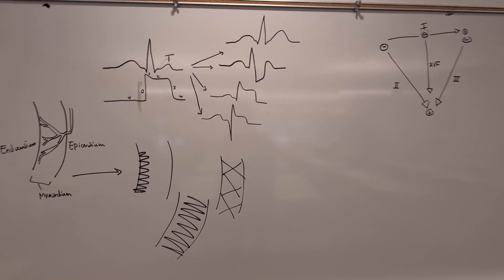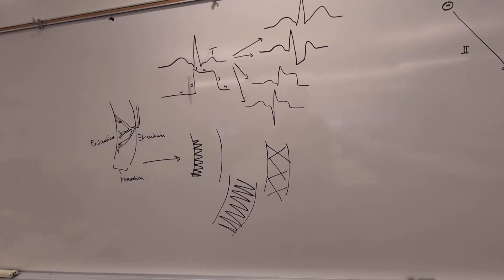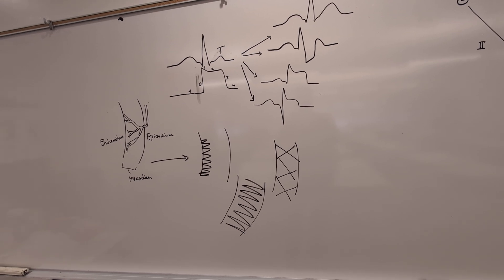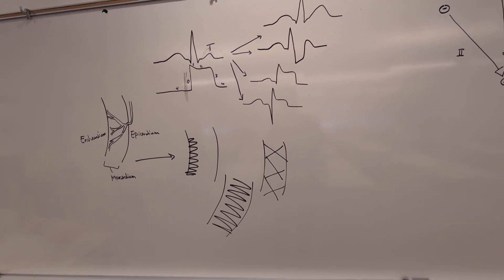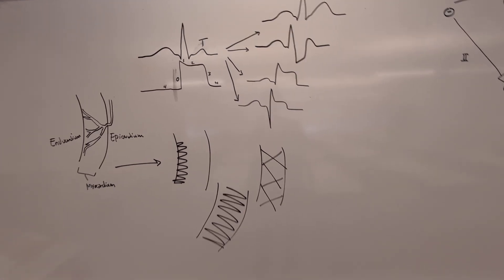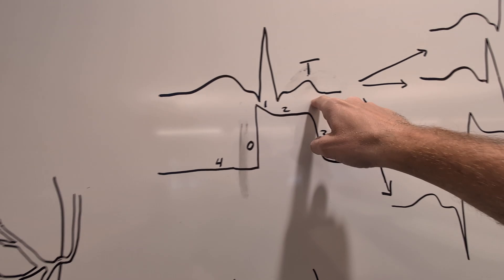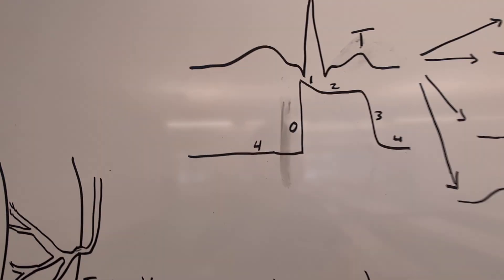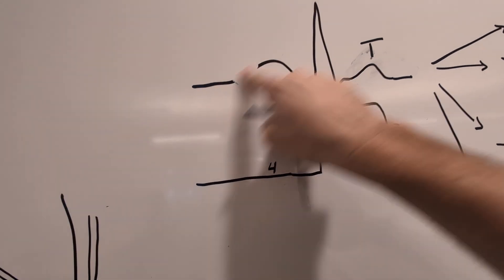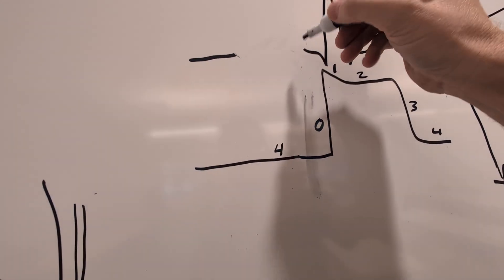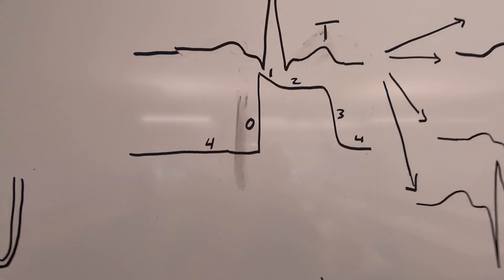So as promised, I'm going to be starting a series of videos talking about the current of injury and how and why that shows up the way it does on the electrocardiogram, the ECG. So just some basic review. Here we have a PQRST complex — let's make that a more reasonable P wave. So you've got your PQRST complex.